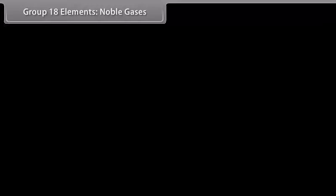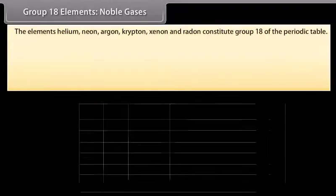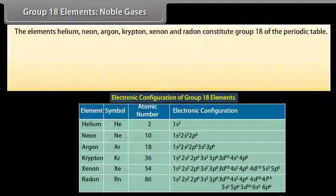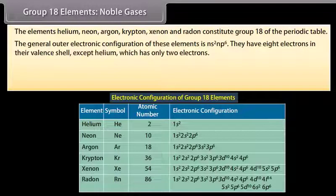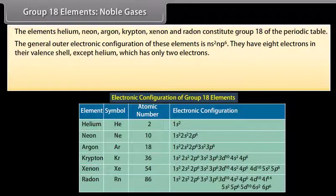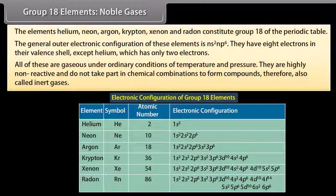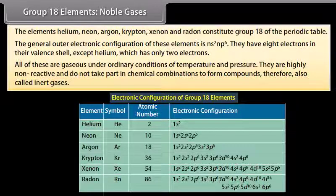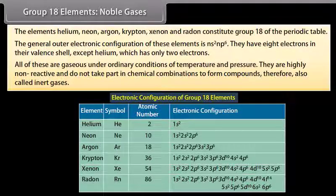Group 18 elements — Noble gases: The elements helium, neon, argon, krypton, xenon and radon constitute group 18 of the periodic table. The general outer electronic configuration is NS2NP6. They have 8 electrons in their valence shell, except helium which has only 2 electrons. All of these are gaseous under ordinary conditions of temperature and pressure. They are highly non-reactive and do not take part in chemical combinations to form compounds, and are therefore called inert gases.